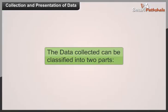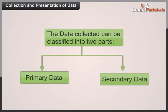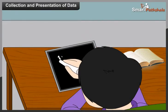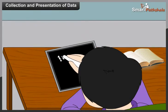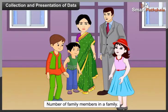The data collected can be classified into two parts: (a) Primary data and (b) Secondary data. Primary data: when the person collects the data himself, it is known as primary data. Examples include: (A) number of family members in a family, and (B) heights of all the students of a class.